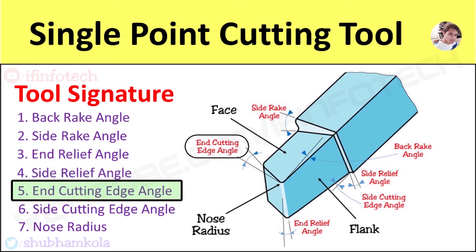Next is end cutting edge angle. It is the angle between the end cutting edge and a line perpendicular to the shank of the tool. This angle provides clearance between the tool cutting edge and the workpiece.